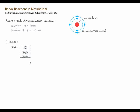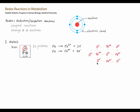Consider iron. Iron has an atomic number of 26, which means that it has 26 protons. When iron is neutral, it has 26 electrons as well. But in the presence of oxygen and water, neutral iron naturally, spontaneously, gives up either 2 or 3 electrons. An iron atom that has given up 2 electrons is iron 2+, and one that has given up 3 electrons is iron 3+. This is what happens in rust — neutral iron loses electrons to form iron 3+, which forms bonds with oxygen to make rust.